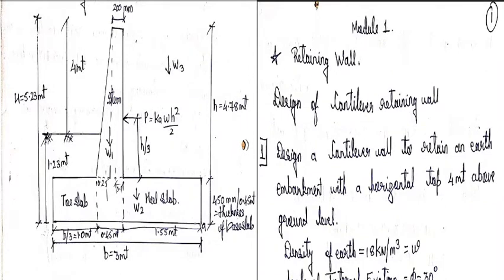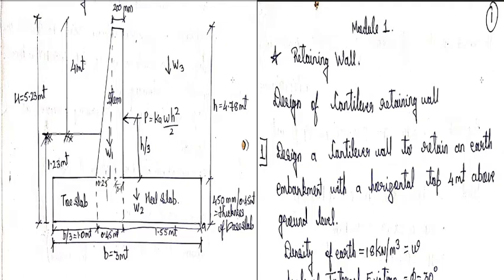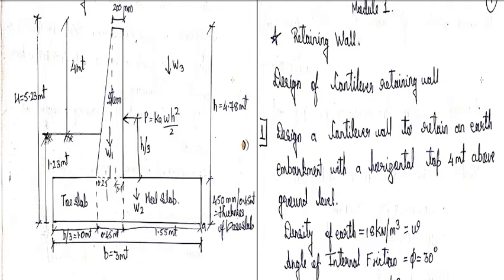Welcome students. For today's lecture on the design of cantilever retaining wall, in the previous lecture we already discussed how the design of retaining wall is done. We had designed the stem portion, the toe slab, the heel slab, and provided reinforcement as per IS 456-2000. We checked reinforcement with respect to diameter of bars and spacing, checked stability against sliding, and designed the shear key if required.